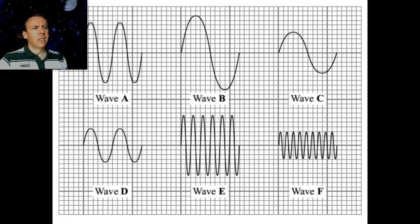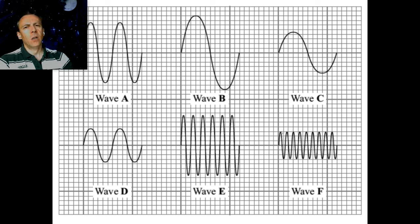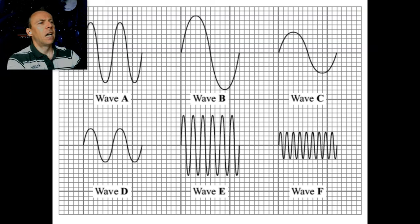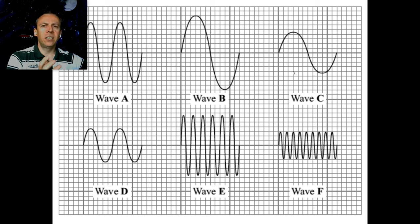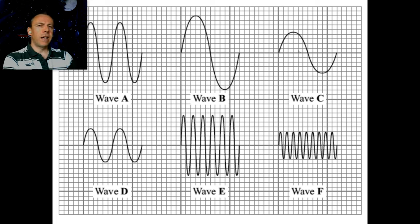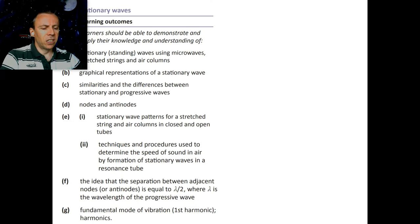The final question: which two of these waves, if they were sound waves, would have the same pitch? The two waves that would have the same pitch are wave B and wave C. Pitch is linked to frequency or wavelength, and these two have the same wavelength. If we look, we've got one block of 10 and then two extra squares for wave B, and one block of 10 and two extra squares for wave C. So wave B and C have the same wavelength and therefore the same pitch.